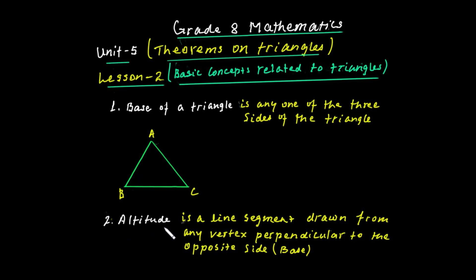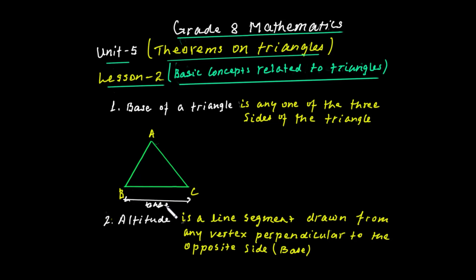Altitude is simply a line segment which is drawn from any vertex perpendicular to the opposite side, which serves as the base of the triangle. The height always goes from the vertex, perpendicular to the base. It is called the altitude.